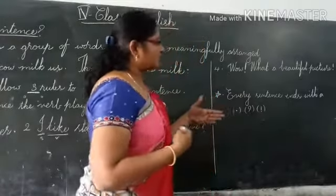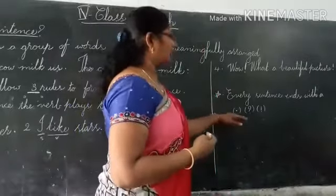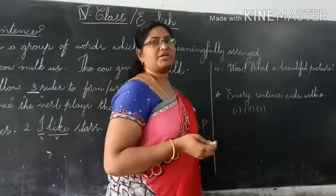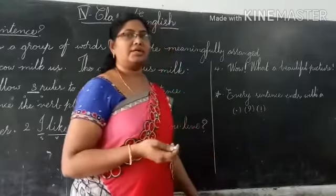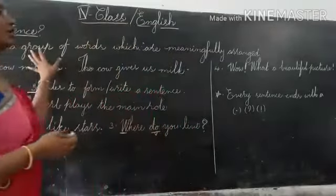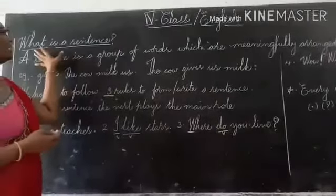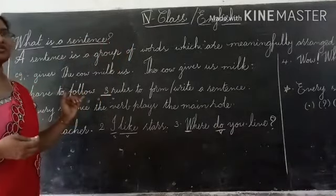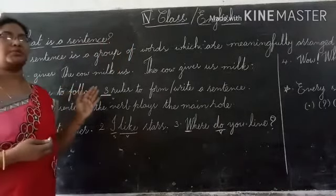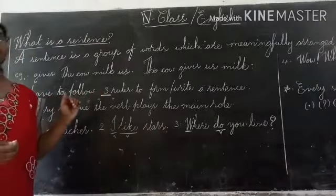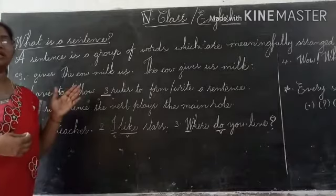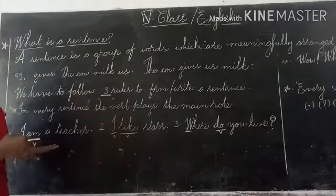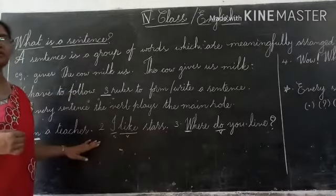Next class, we will learn which are the types of sentences and where we have to use a full stop, where we have to use a question mark, and where we have to use an exclamation mark. Today, what did we learn? We learned about sentences. A sentence is a group of words which are meaningfully arranged. To make or form a sentence, we have to remember three rules: we have to start the sentence with a capital letter, the sentence must contain a verb, and we have to end the sentence properly. Thank you.